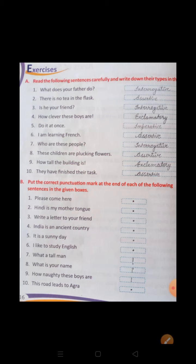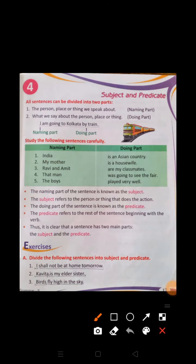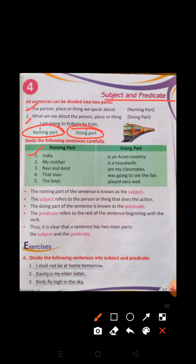Now we will revise lesson number 4: Subject and Predicate. All sentences can be divided into two parts. Number 1: the person, place, or thing we speak about is the naming part. Number 2: what we say about the person, place, or thing is the doing part. For example: I am going to Kolkata by train. Here, 'I' is the naming part, and 'am going to Kolkata by train' is the doing part. India is an Asian country — 'India' is the naming part and 'is an Asian country' is the doing part.